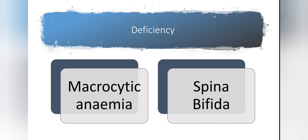Spina bifida, also referred to as neural tube defect, occurs in newborns whose mothers are deficient in vitamin B9 during pregnancy. In this condition, a dome-like structure forms at the back of the baby containing neural fluid. In early pregnancy, the first structure formed in the embryo is the neural tube, which requires rapid cell replication. If the mother is deficient in vitamin B9, DNA synthesis is impaired, altering cell replication and causing pores in the neural tube through which neural fluid leaks out.